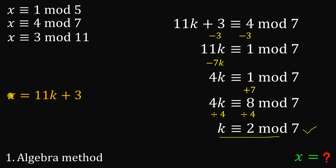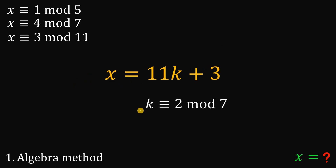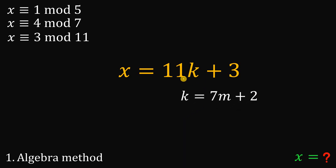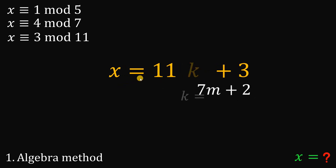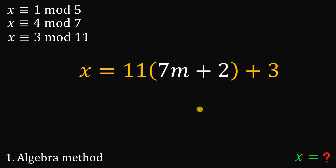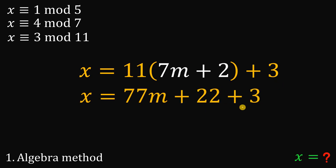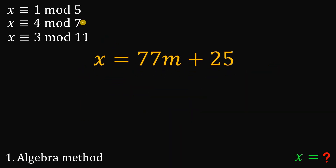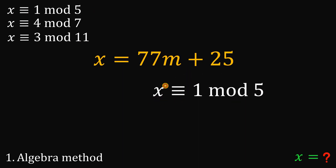At this point, we use this result and the value of x. Since k is congruent to 2 mod 7, we rewrite this as k equals 7m plus 2, where m is also an integer. We then replace k in the expression for x. So x equals 11 multiplied by (7m plus 2) plus 3. Simplifying: 77m plus 22 plus 3, which gives us 77m plus 25. This is now the value of x using two of the given congruences. Now let's bring in the third one — x is congruent to 1 mod 5 — and replace x with 77m plus 25.